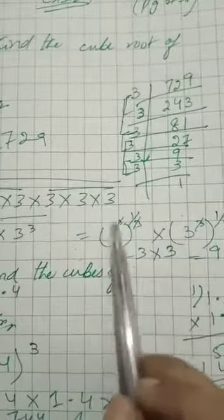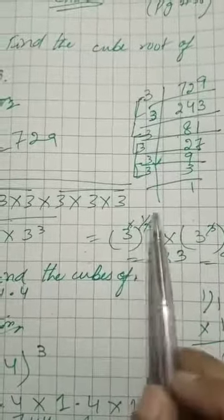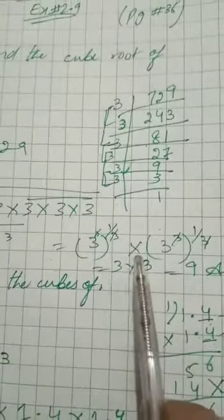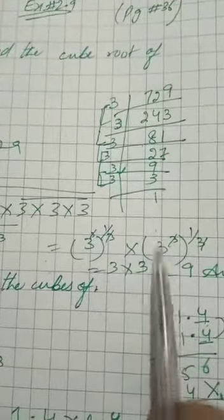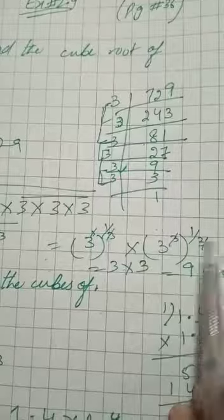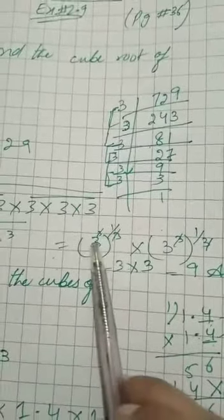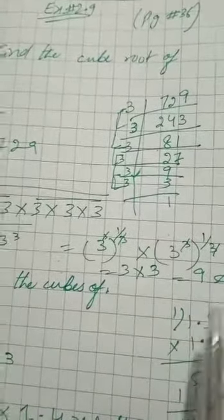Then I have to find the cube root. I have to write 3 cubes in the bracket and then I have to write 1 by 3. Then I multiply 3 cubes and then I have to write 3, 3 cross, 3, 3 cross. It is simple. 3 multiply 3, so 3 into 3 is the answer.